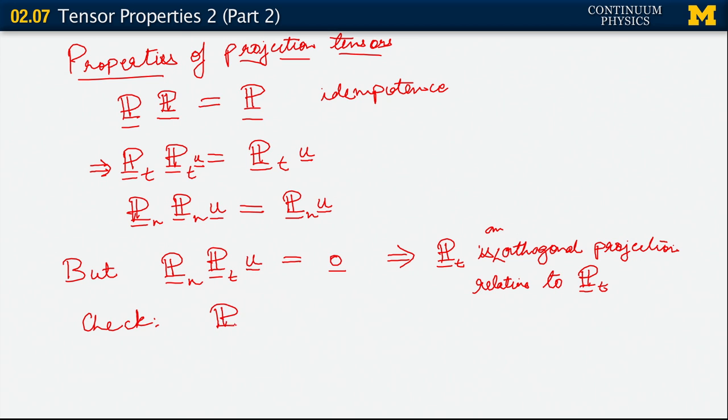Let's start out with P sub t acting on u. We know that this is u dot t along the t direction. But then, P sub n acting on P sub t of u is equal to P sub n acting on...